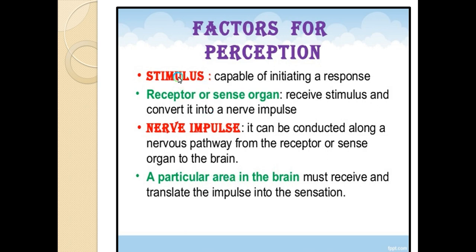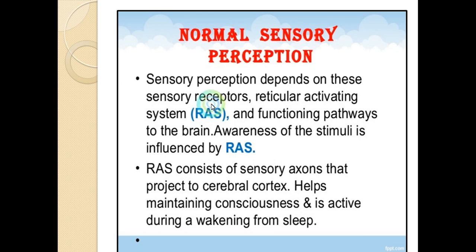Different areas in the brain are responsible for translating different stimuli — for example, the optic center handles vision while another area handles taste. To summarize the four factors: a stimulus creates a response; a receptor converts it to a nerve impulse; the nerve impulse travels to the brain; and a specific brain area receives and interprets the signal.